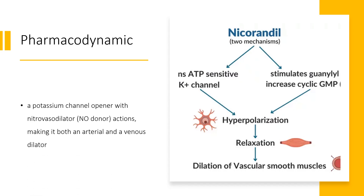Pharmacodynamics: Nicorandil is a potassium channel opener with nitrovasodilator, NO donor actions, making it both an arterial and venous dilator. It causes sustained dilation of both the arterial resistance and conductive vessels, increasing coronary blood flow. However, the effect on arteries does not involve the coronary steal phenomenon. Activation of potassium channels leads to hyperpolarization of smooth muscle cells, followed by arterial dilation and afterload reduction. Nicorandil increases pooling in the capacitance vessels with a decrease in preload through relaxing the venous vascular system. Overall, improved blood flow and reduced infarct size are achieved through reduction of end-diastolic pressure and decreased extravascular component of vascular resistance.